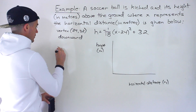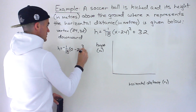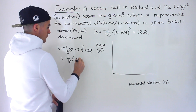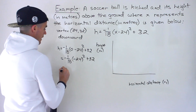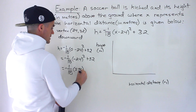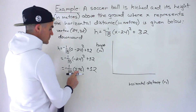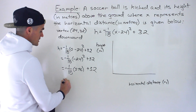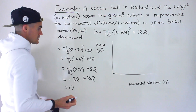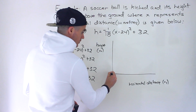Plugging in zero for x: we get zero minus 24, which is negative 24, squared, plus 32. Negative 24 squared gives us 576. Then negative 1 over 18 times 576, or 576 divided by negative 18, gives us negative 32. Then plus 32 gives us zero. So at an x value of zero, we get an h value of zero.